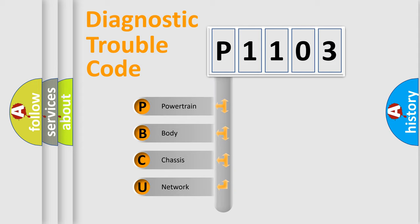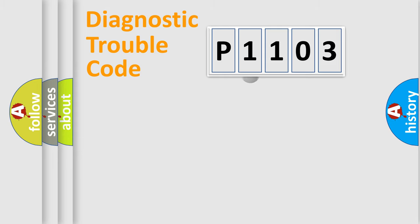We divide the electric system of automobile into four basic units: Powertrain, Body, Chassis, and Network. This distribution is defined in the first character code.